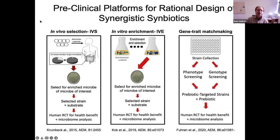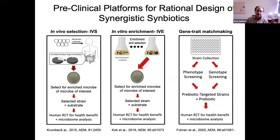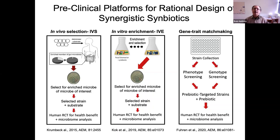In my lab, we've developed a couple of these platforms. One's called 'in vivo selection, in vitro enrichment' — the whole idea is to feed a prebiotic or substrate to either an individual or to fecal samples and select for those strains that outcompete all others in the human or in a fermenter for that substrate, then repair them and reconfirm that those symbiotics become established in humans. You still have to do an RCT for a health benefit. Another approach is called gene trait matchmaking — looking at phenotypes and genotypes in vitro, confirming that the strain of interest is able to consume and ferment the substrate of interest — and then still doing a human RCT.